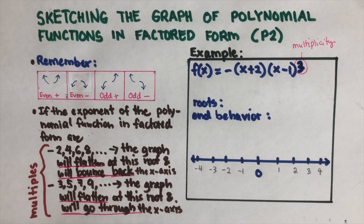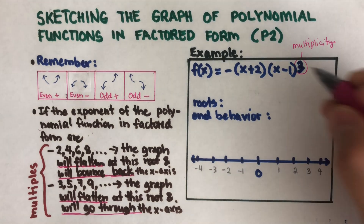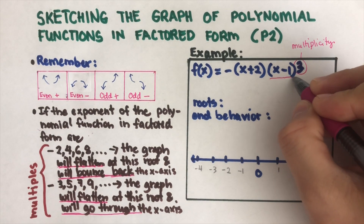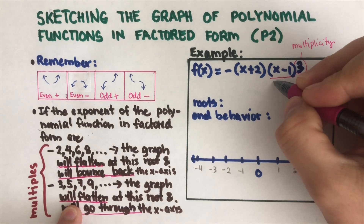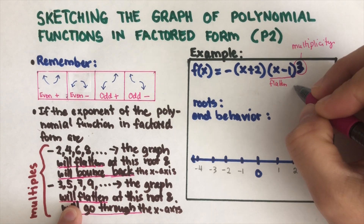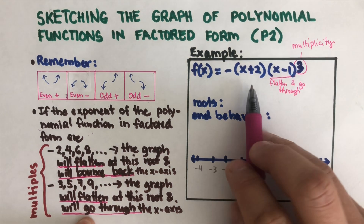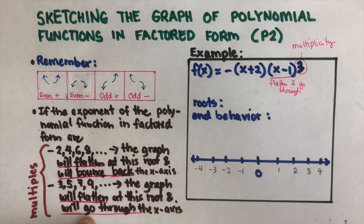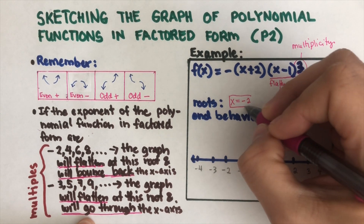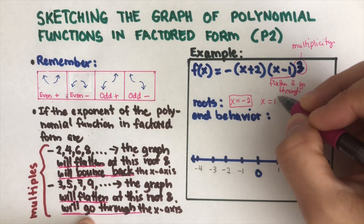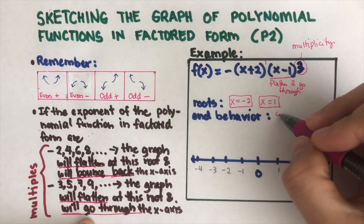Let's start with the first example. I'll label the roots with multiplicity first. The exponent of three is a multiple of three, five, seven, nine — so it will flatten and go through. The roots are x equals negative two and x equals positive one. The degrees are three plus one, which is fourth degree.